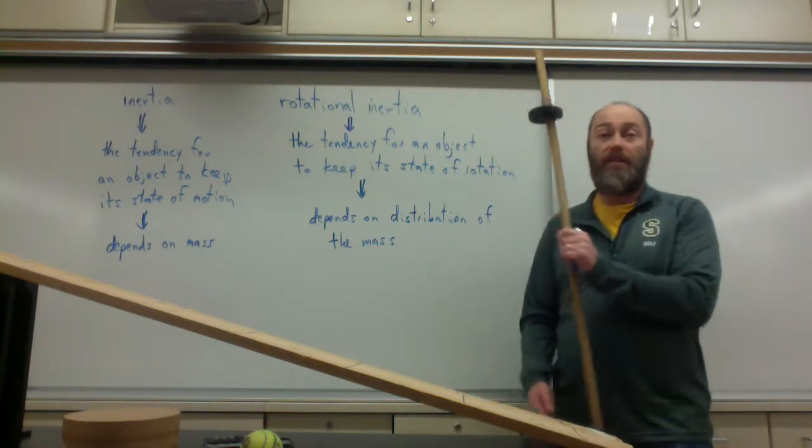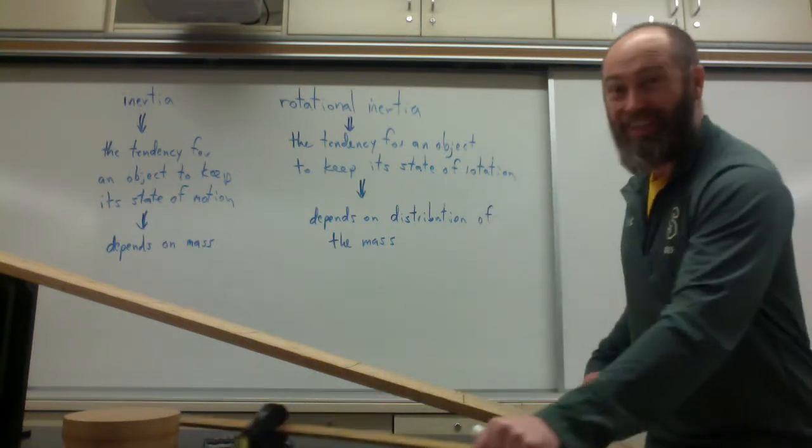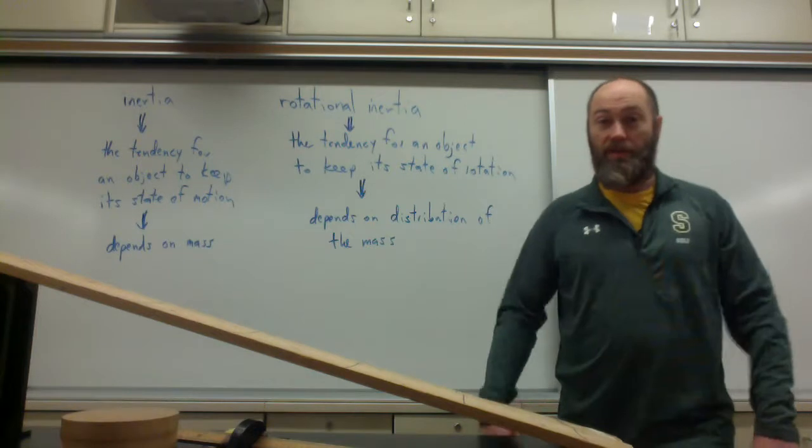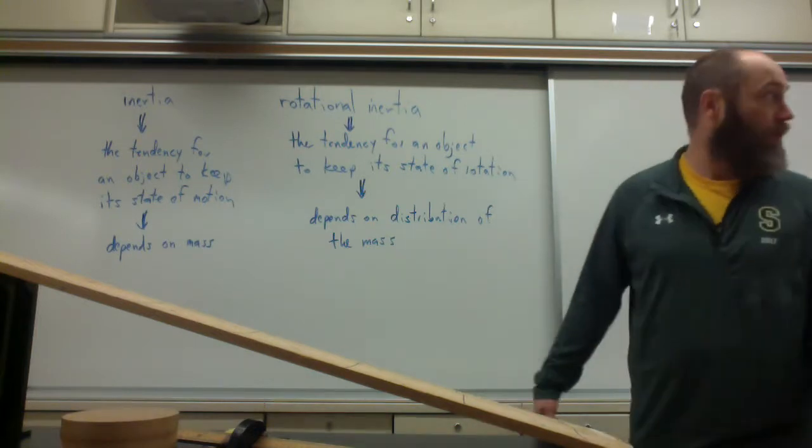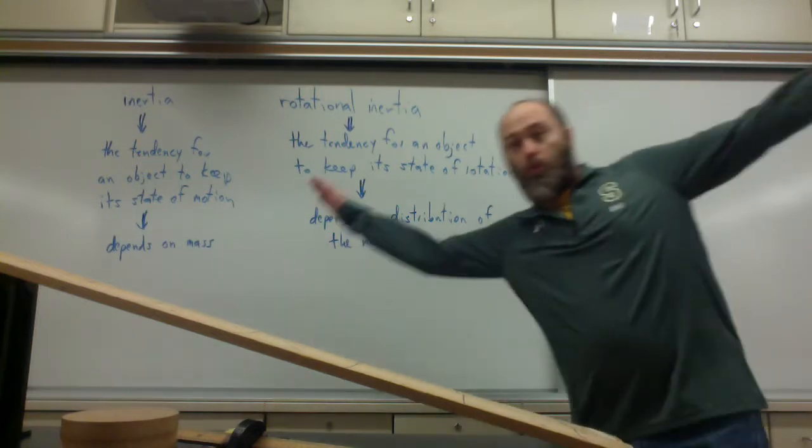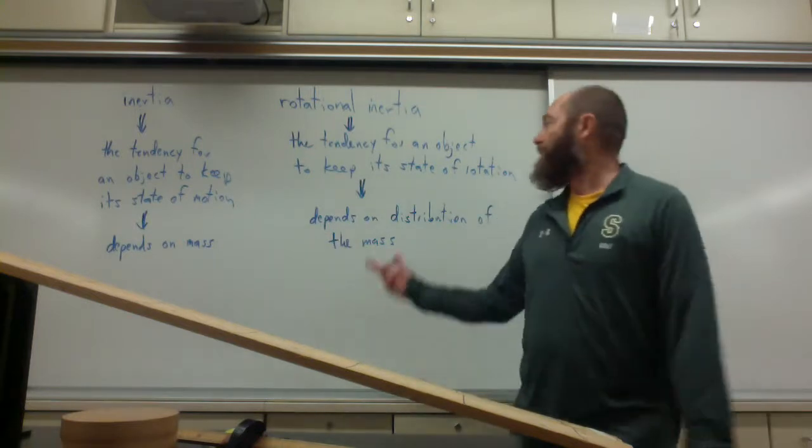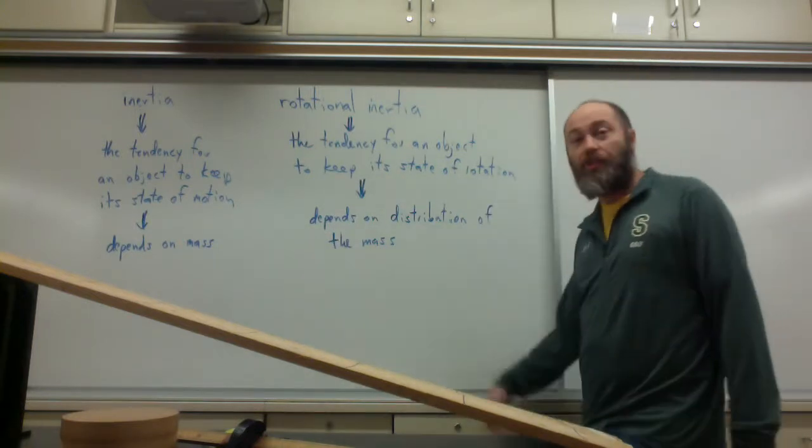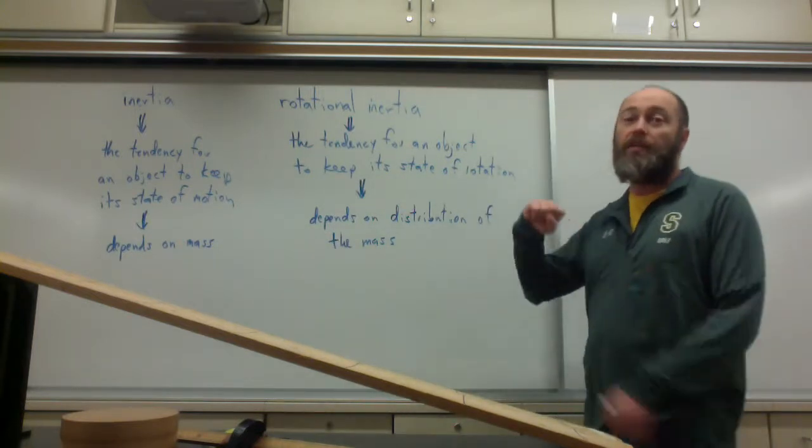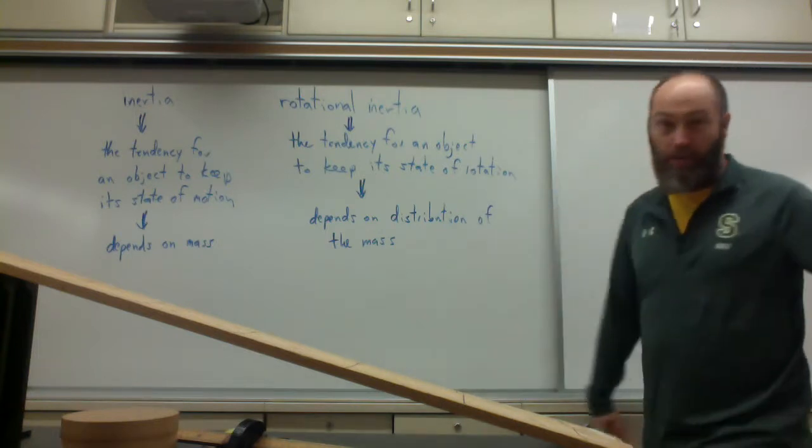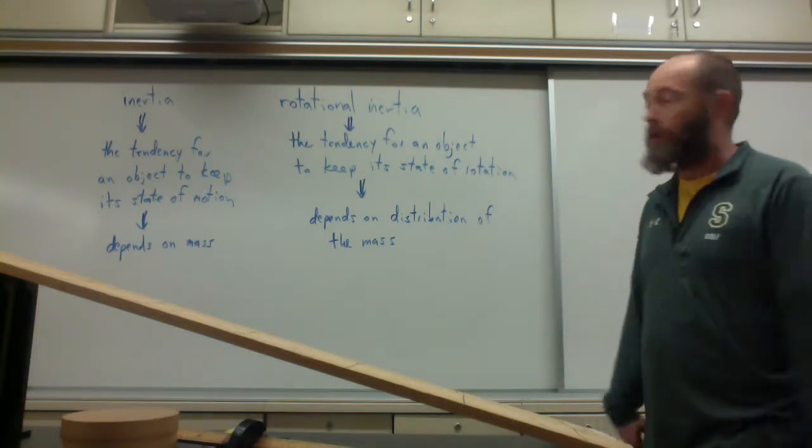And this explains why tightrope walkers carry really long poles. This explains when you walk along, why you go like whoa, you put your arms out, so that you're going to increase your rotational inertia, make it harder for you to rotate, means easier for you to keep your state of rotation, which is not rotating.